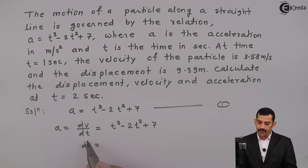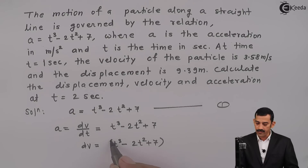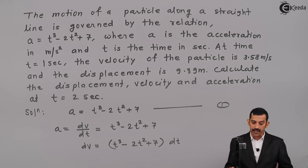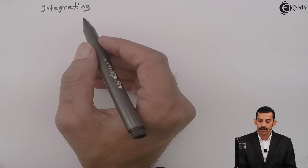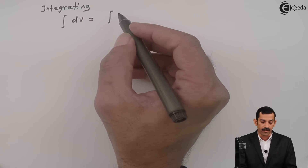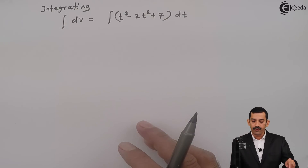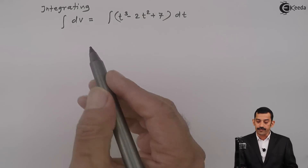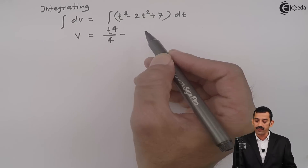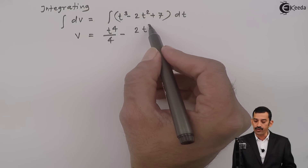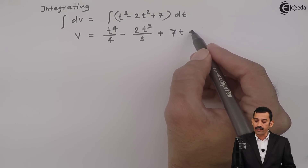Therefore, dv = (t³ - 2t² + 7) dt. Now we integrate this equation. Integrating both sides: the integral of dv on the left side gives v, and on the right side, the integral of t³ becomes t⁴/4, minus the integral of 2t² gives 2t³/3, plus 7 is a constant term giving 7t, and there is a constant of integration c1.